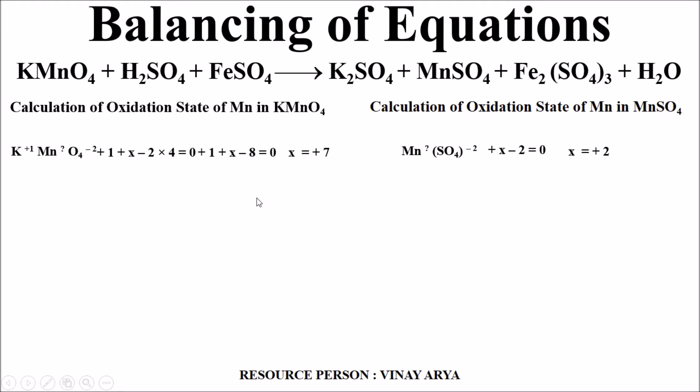The same element Mn is showing oxidation state of +7 in reactant side in KMnO4 and in product side in MnSO4 as +2. This is reduction where the number is decreasing from +7 to +2. Now, the second part where oxidation will take place will be Fe+2 which is converted to Fe+3. Ferrous is converted to ferric.